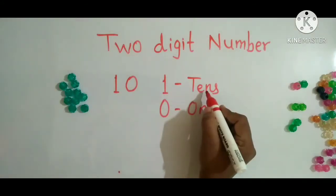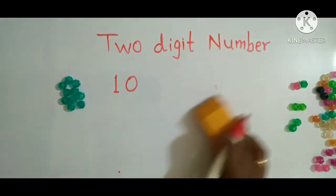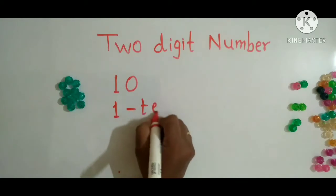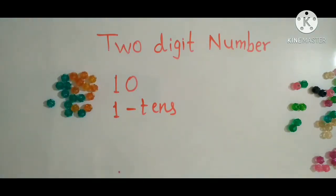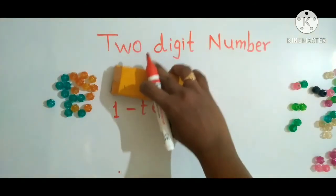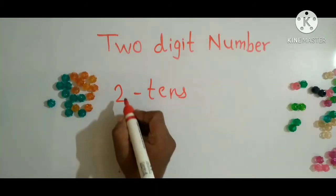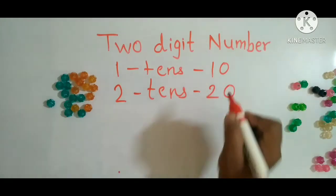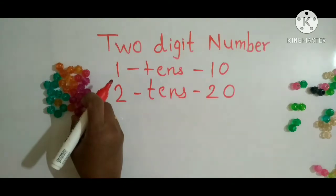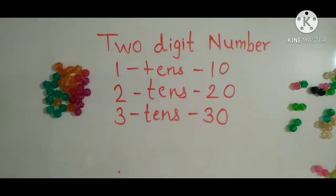Here 1 is at the tens place and 0 is at the ones place. So these 10 beads mean 1 ten. Now I add 10 more beads, so we get 2 tens. We write 1 ten as 10, so we write 2 tens as 20. Again I add 10 more beads — so these are 3 tens, which is 30. Likewise, if we add 10 beads each time, we get the next ten.